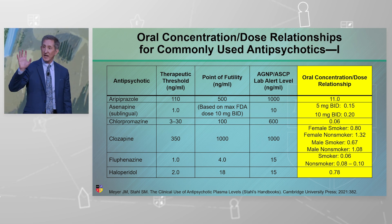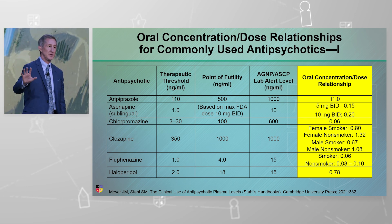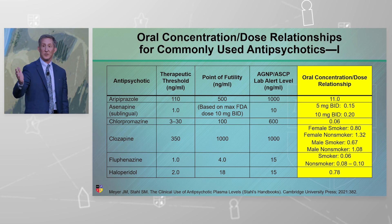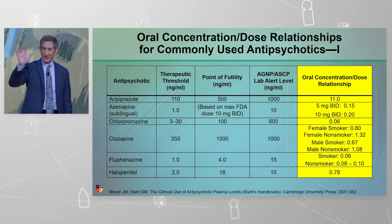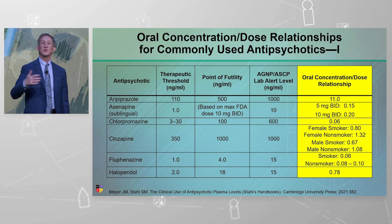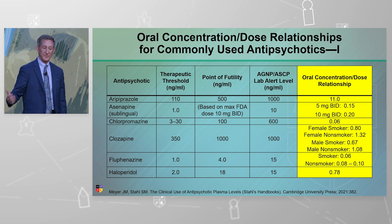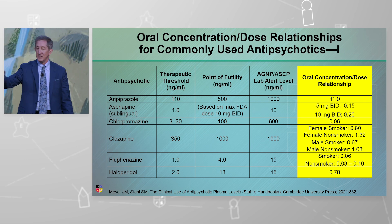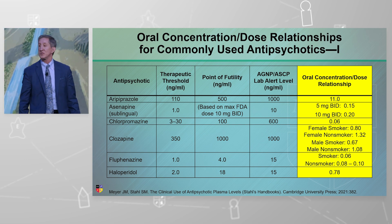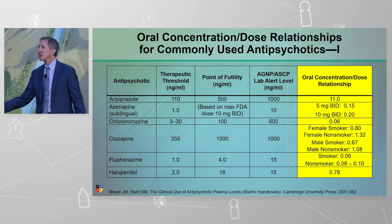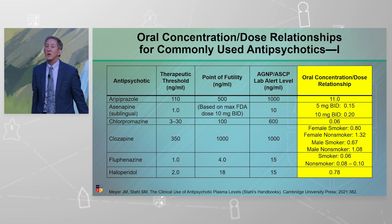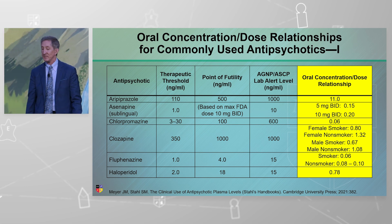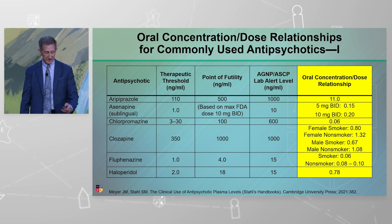These are population averages for people who are extensive metabolizers and are not on inhibitors or inducers — the ideal world, but it gives you a place to start. For example, if you're on aripiprazole 20 at night, you multiply it times 11.0. You'd expect something in the low 200s as a 12-hour level. You just do the math — you can use a calculator.